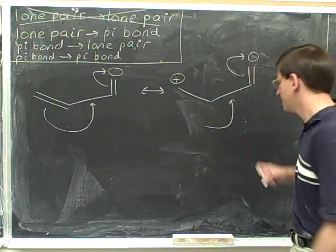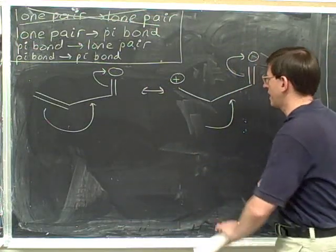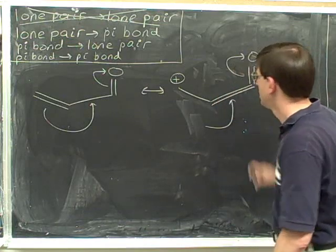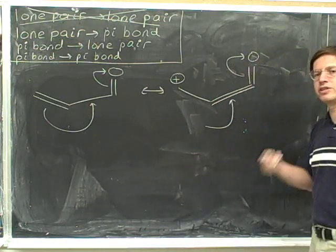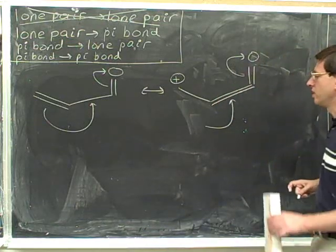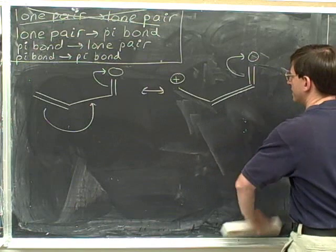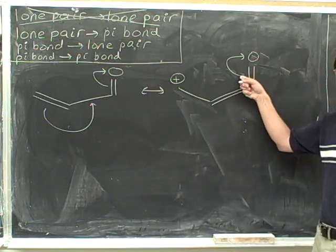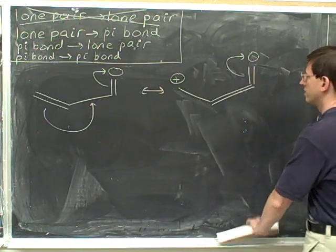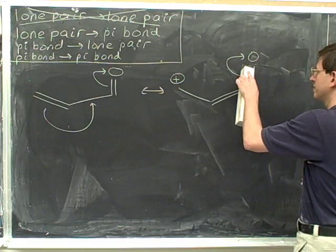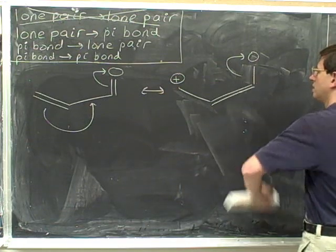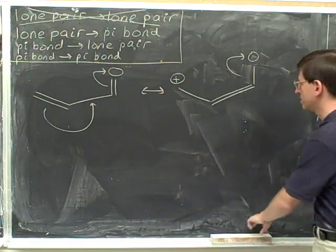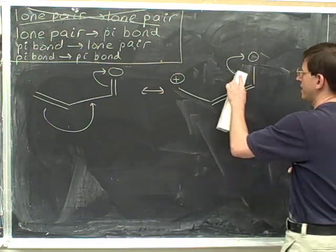Now we go and look at this head — it indicates the creation of a pi bond. We're in the middle of the string of arrows, so no charges change. We erase the head. We look at this tail; it indicates that we're moving a pi bond, so we erase that pi bond. We're in the middle of the arrows, so we don't change any charges. We erase that tail.